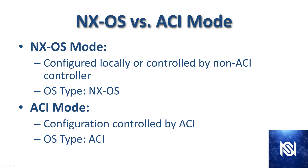In NXOS mode the configuration is either determined locally or it can be controlled by a non-ACI controller. Another thing to note is that when you're in NXOS mode, if you were to do 'show version', the operating system type is going to be NXOS.